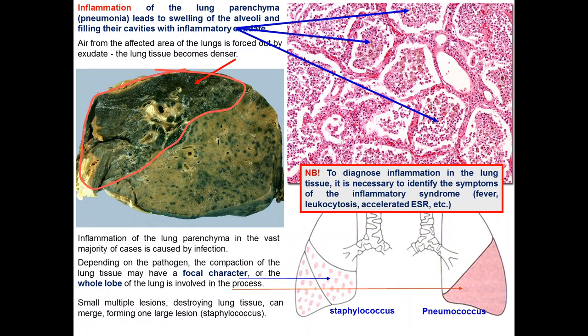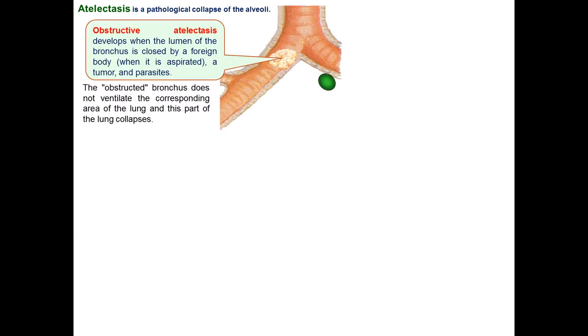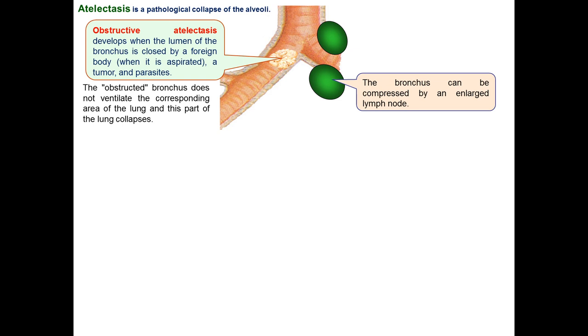Small multiple lesions destroying lung tissue can merge to form one large lesion — for example in staphylococcal infection — or involve a whole lobe, as in pneumococcal pneumonia. To diagnose inflammation or pneumonia, it is necessary to identify additional accompanying symptoms such as symptoms of inflammatory syndrome: fever, leukocytosis, increasing ESR, and intoxication syndrome.